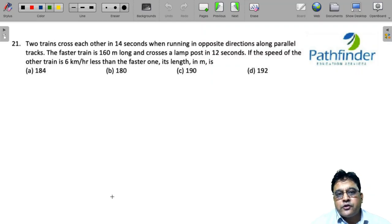CAT 2021 slot 1 quantitative aptitude question number 21. Two trains cross each other in 14 seconds when running in opposite directions along parallel tracks. The faster train is 160 meter long and crosses a lamp post in 12 seconds. If the speed of the other train is 6 kilometer per hour less, its length in meter is.